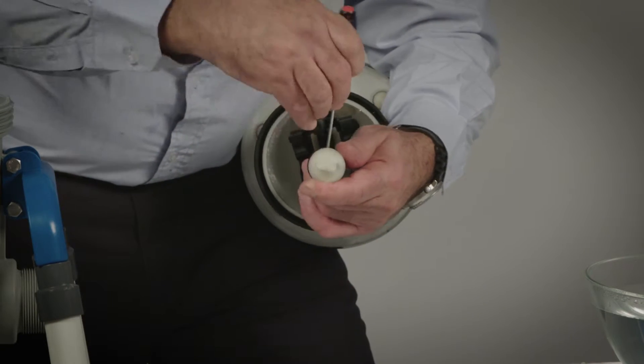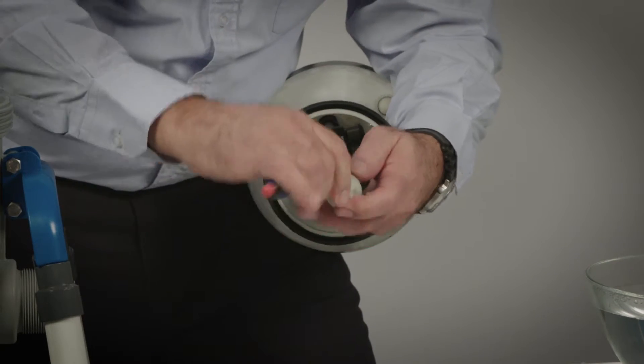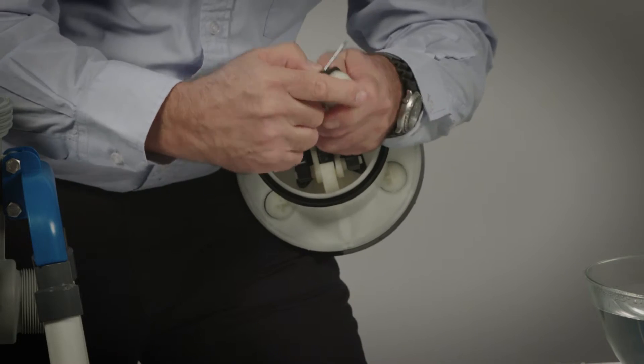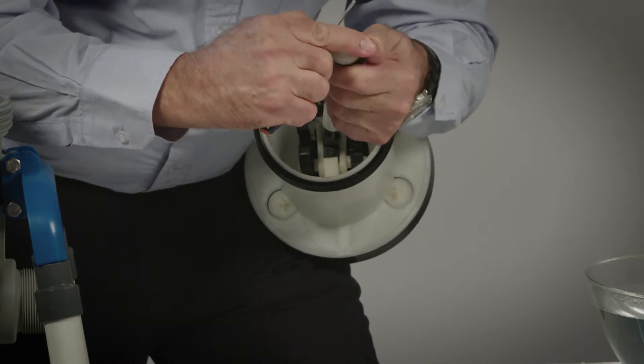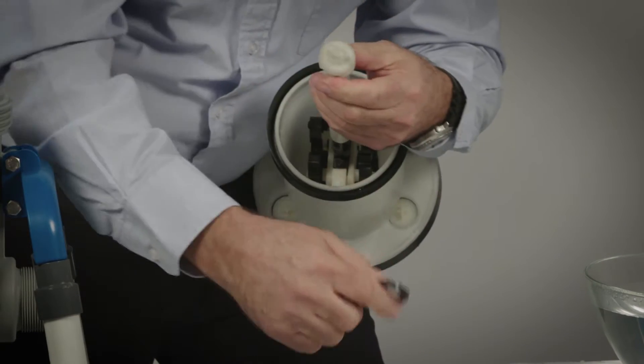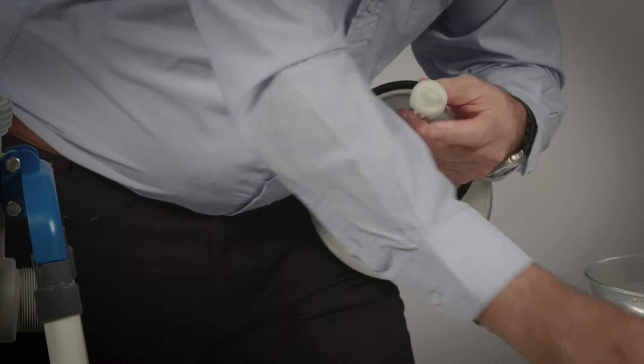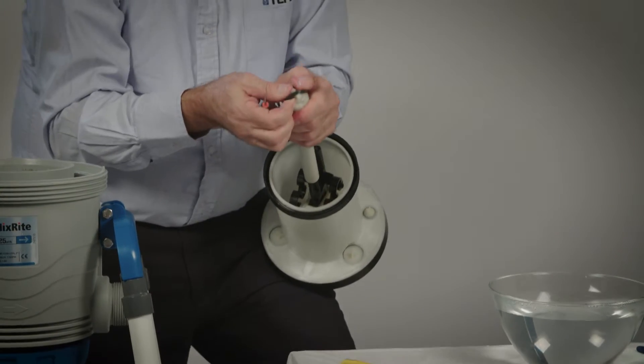Remove the rubber suction seal, assisted with a small screwdriver. Insert the new rubber suction seal onto the suction piston.